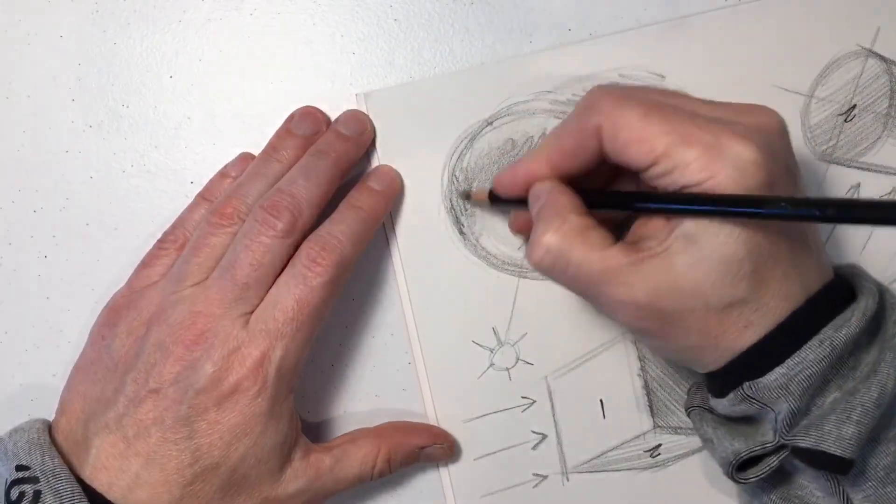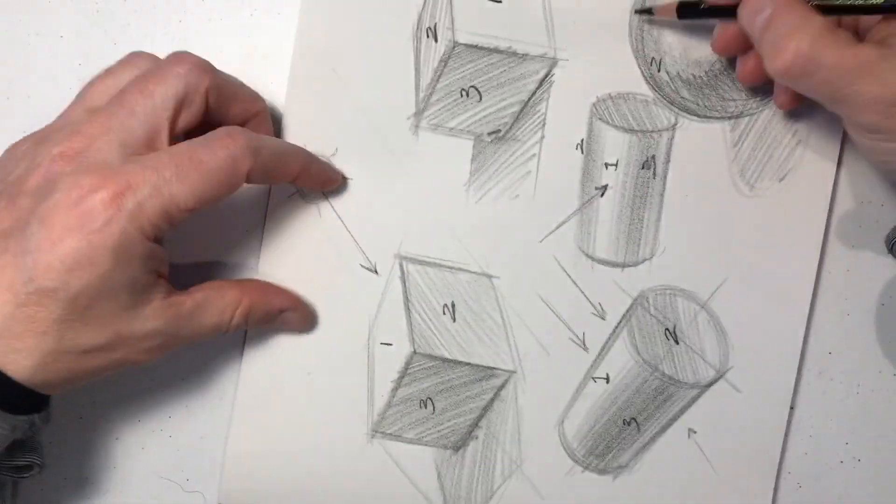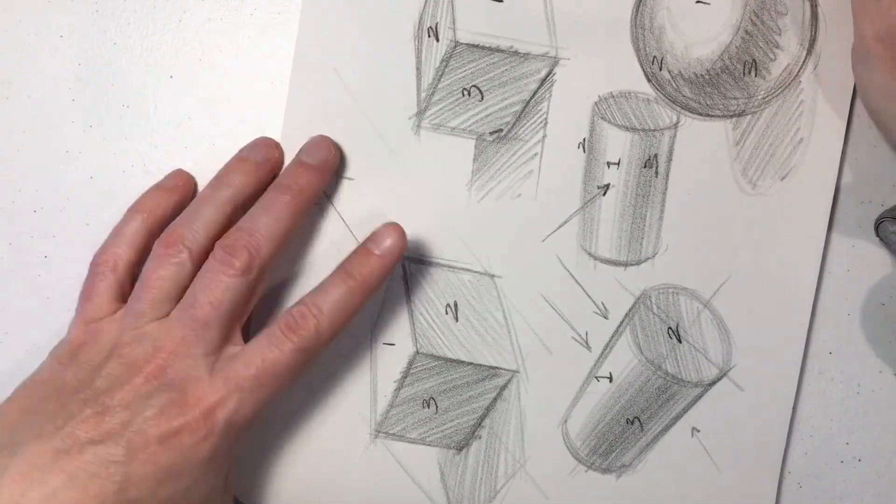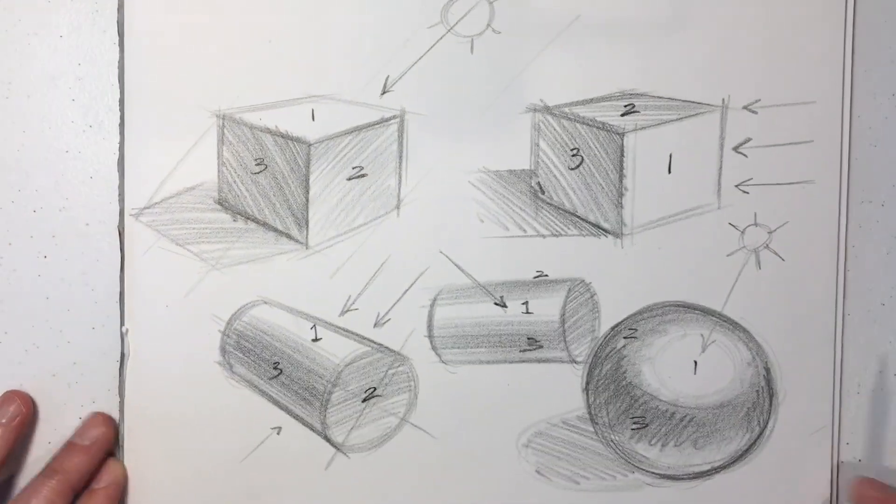So these are the fundamental basics of rendering shapes and forms. As we begin to draw cars, those shapes and forms become much more complicated. But the basic principles remain the same.